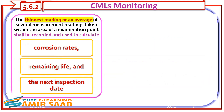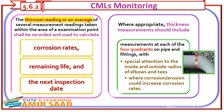The thinnest reading, or an average of several measurement readings taken within the area of an examination point, shall be recorded and used to calculate corrosion rates, remaining life, and the next inspection date. Where appropriate, thickness measurements should include measurements at each of the four quadrants on pipe and fittings, with special attention to the inside and outside radius of elbows and tees where corrosion or erosion could increase corrosion rates.